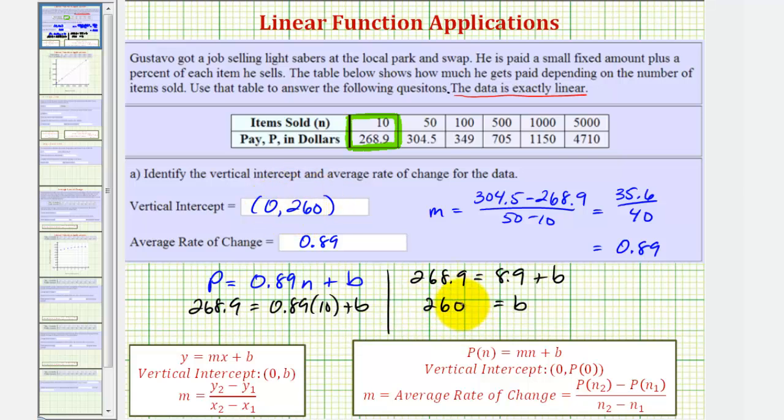By finding the average rate of change and the vertical intercept, we also found the equation that relates p and n. We now know that p is equal to 0.89n plus 260, and we'll need this for the next part.